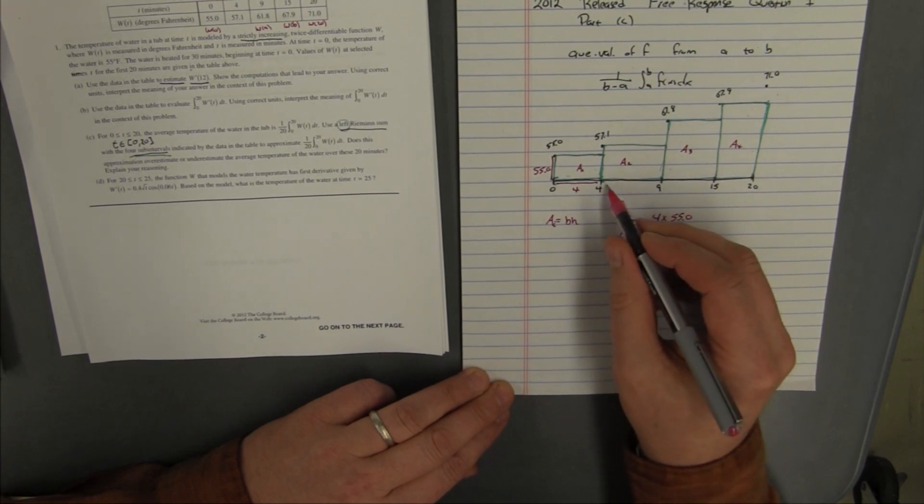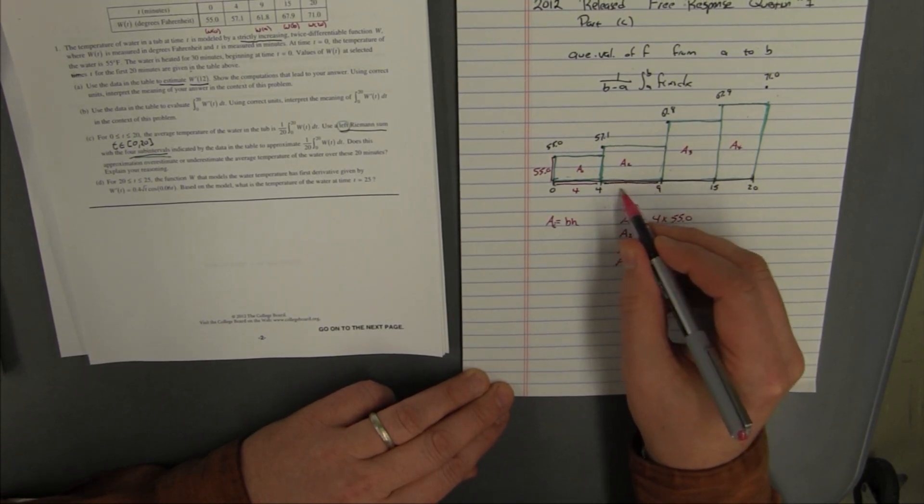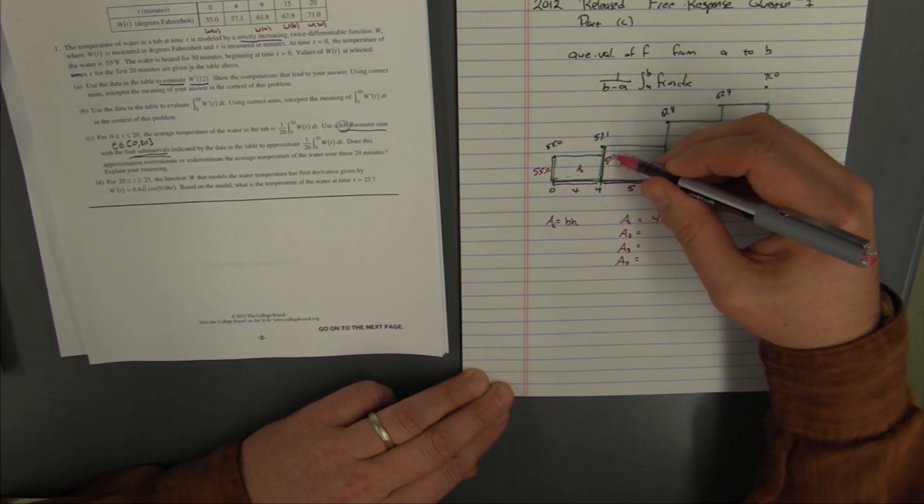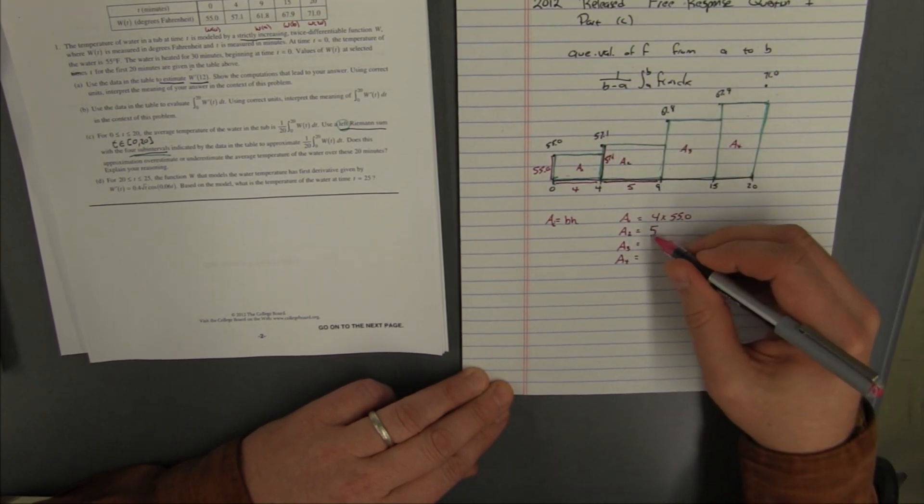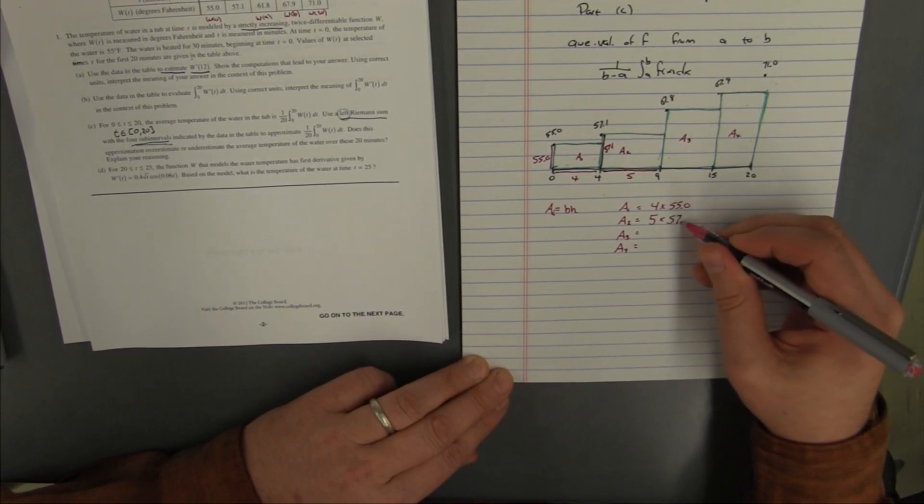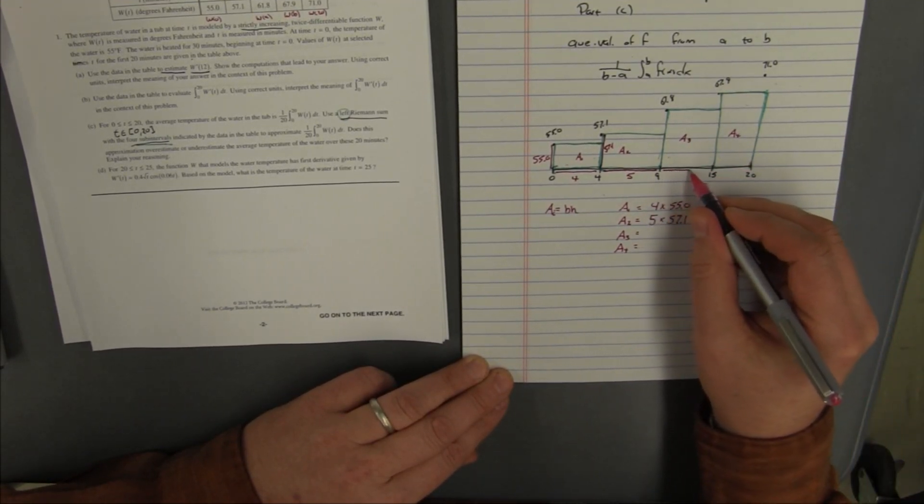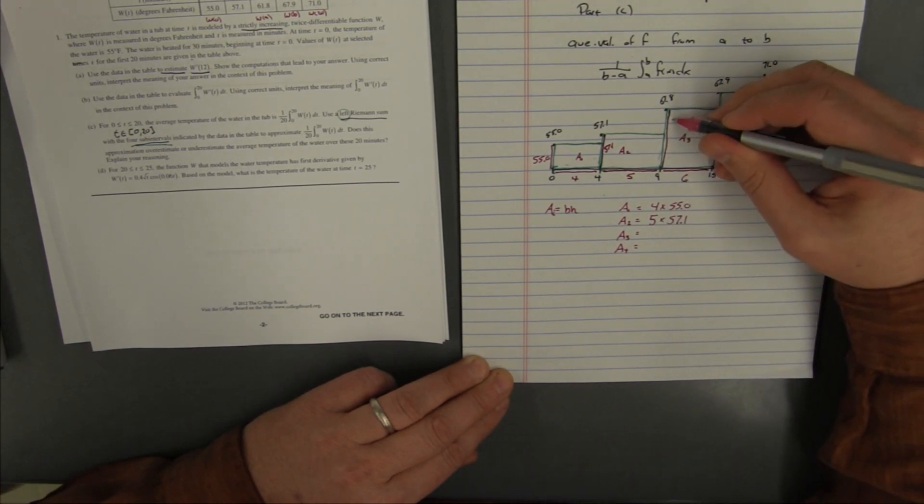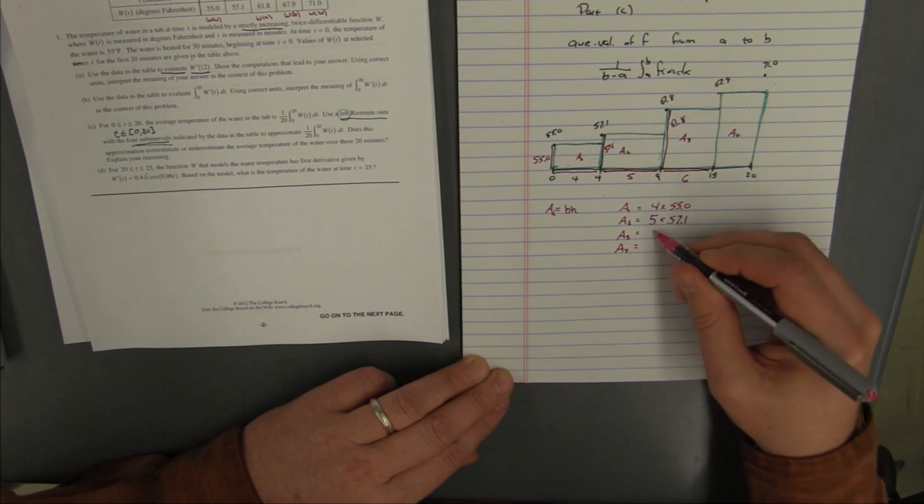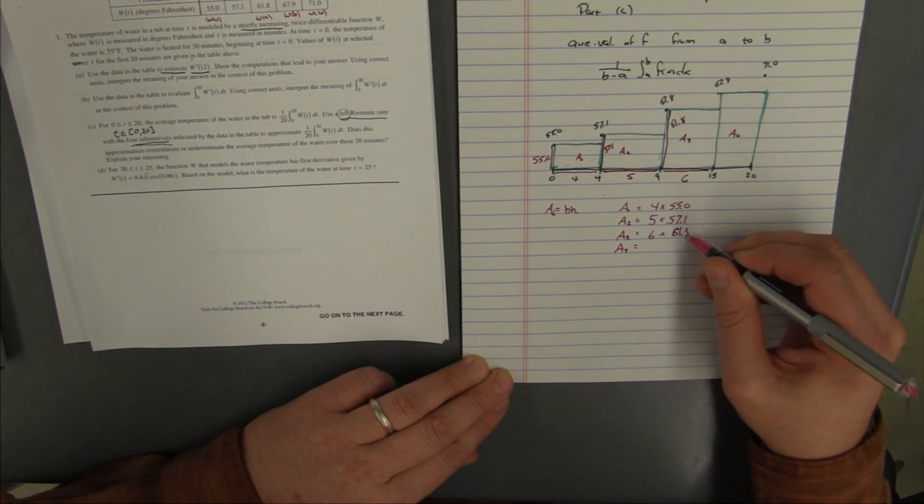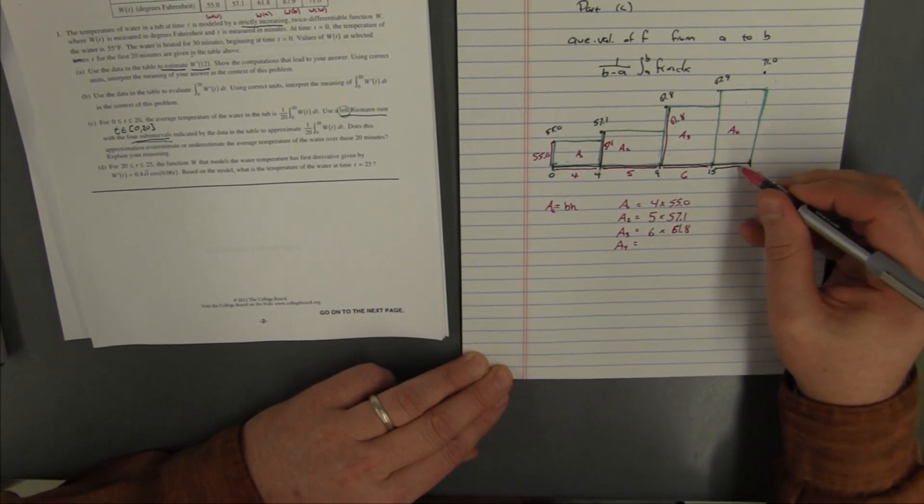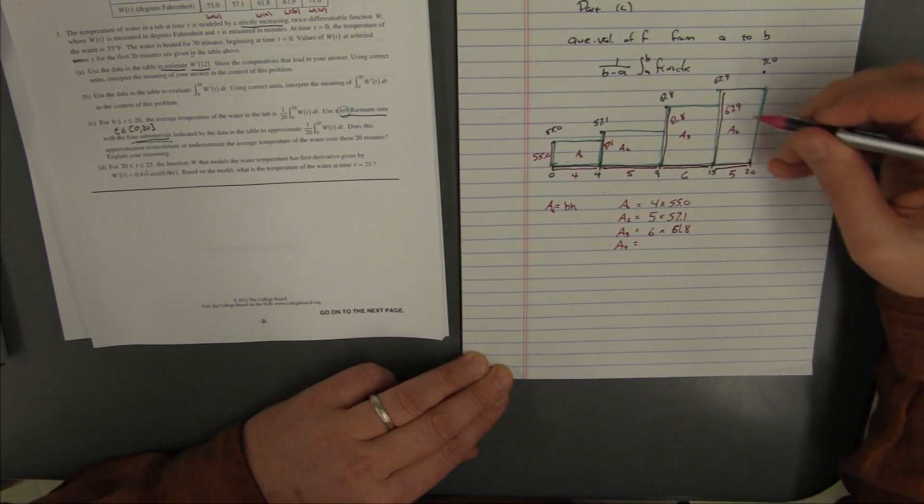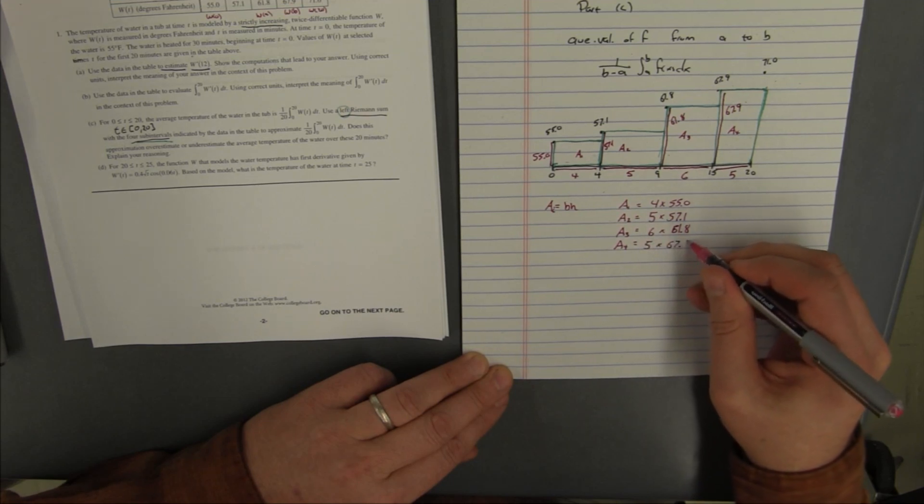That second rectangle is, now watch out because the base is varying. The base now is 5, and the height is 57.1. So my second rectangle is 5 by 57.1. My third rectangle, the base of it is from 9 to 15, so that's 6, and the height is 61.8. So I have 6 times 61.8. And then my last rectangle, its base is 5, its height is 67.9. So that's 5 times 67.9.